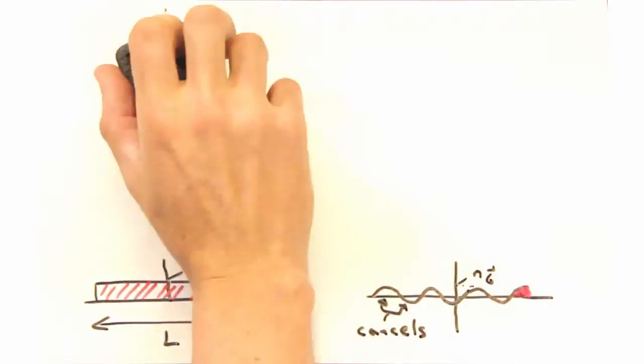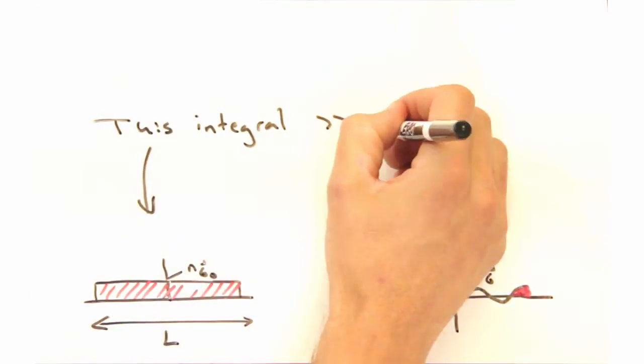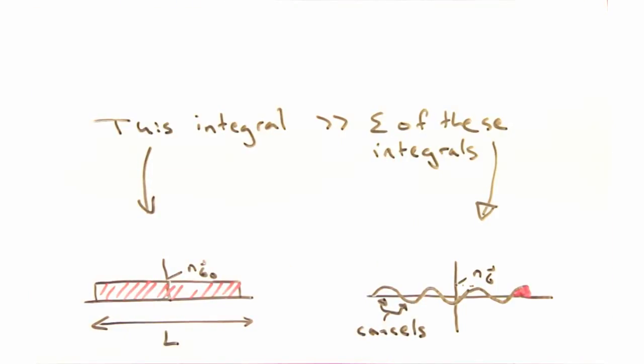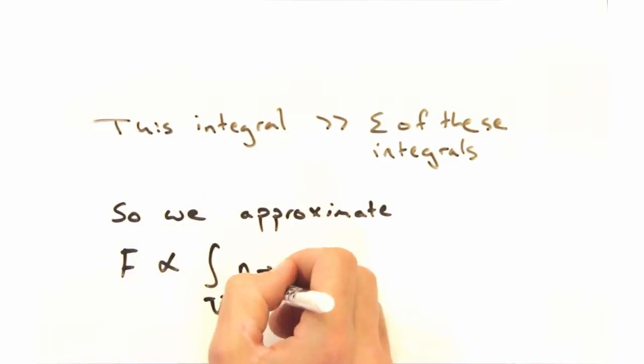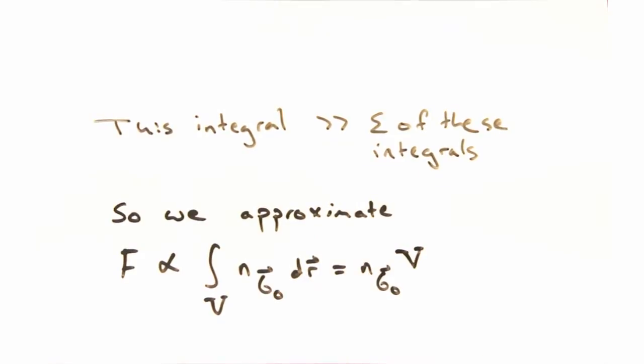Right, and the contribution from that tiny bit is pretty small when compared to the contribution from the G equals G-naught term, so we choose to ignore it and can instead approximate the amplitude as being proportional to nG times the volume.